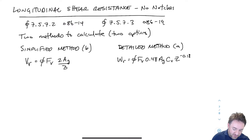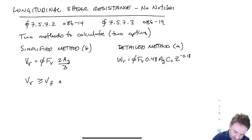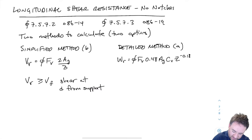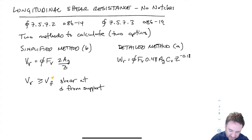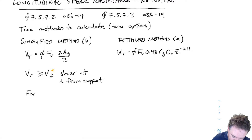For the simplified method, my check is basically that VR is greater than or equal to VF, which is the shear at a location D from the support. For the simplified method, we are allowed to do the same thing that we did for lumber: not consider that the loads within D of the support contribute to the shear. So I calculate my VR and I can compare it to VF at a location that's D away from the support.